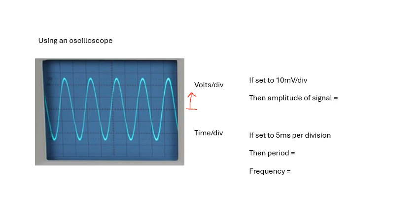So each square, as I said, it's like a graph of voltage against time. So each of these big squares represents a certain amount of time. For example, if it's set to five milliseconds per division, then what is the period? Yes, the time for one oscillation. What's the period and therefore the frequency of this signal?